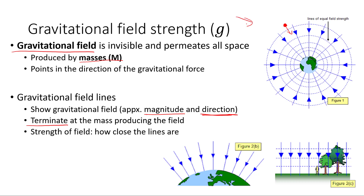We can see this on the Earth in the top right — all the lines come in pointing towards the Earth, because the gravitational field around the Earth points directly towards the center of the Earth. Field lines can only end on the mass that's producing the field, and they never cross. The direction that the field points tells us the direction of the force.